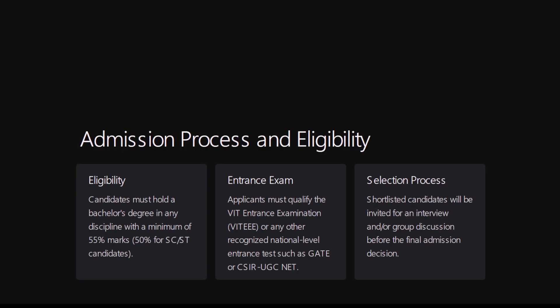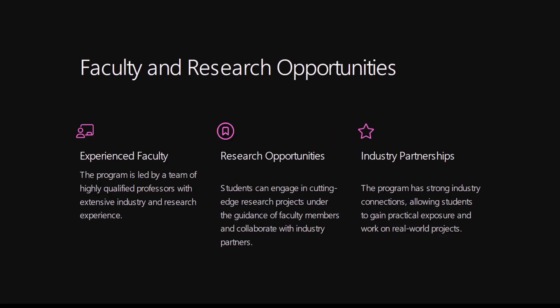For the admission process and eligibility, you should have a bachelor's degree in any discipline with a minimum of 55 percent. The entrance exam is conducted by the university, which is VITEEE, every year. If you have qualified exams such as GATE or CSIR UGC NET, those scores are also applicable. After the entrance exam, an interview will be held, followed by final admission submission after the interview.